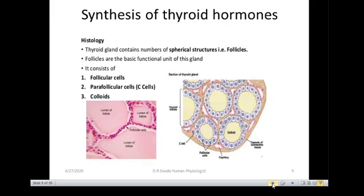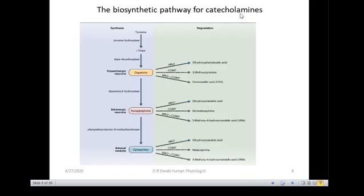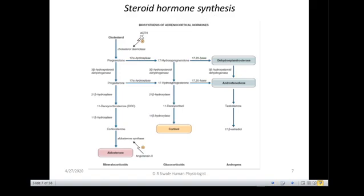So this is basically how synthesis of thyroid hormones takes place. We've looked at the biosynthesis pathway for catecholamines: tyrosine is converted to dopamine, then norepinephrine, then epinephrine, involving a series of enzymes. For steroid hormones, enzymes are involved to synthesize mineralocorticoids such as aldosterone. Deficiency of any of these enzymes will cause accumulation of other products or other steroid hormones.